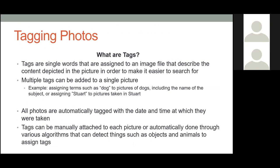Tags are single words assigned to an image file that describe the content depicted, in order to make it easier to search for. When you click on an image, there can be words associated with it that you can type in yourself or have done automatically. If a dog is in the picture, you can just type 'dog.' You can tag the name of the person, the city where it was taken. You can have multiple tags for a single picture, and when you search that word in a search box, pictures with those same tags will show up.